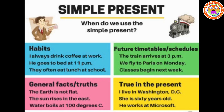Next, true in the present — our unchanging situation. For example, 'I live in Washington, D.C.' 'She is 60 years old.' 'He works at Microsoft.' Unchanging situation means: 'I am a teacher. I teach you English. I go to school by bus.' Can you change this? No. That is called an unchanging situation. So in those situations — daily habits, general facts and truths, future timetables and schedules, true in the present — we can use simple present tense.